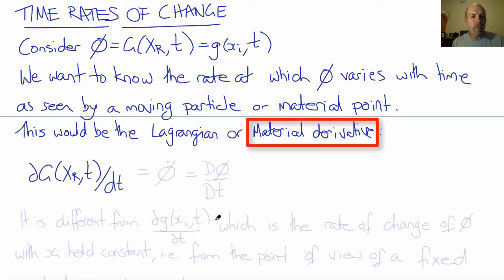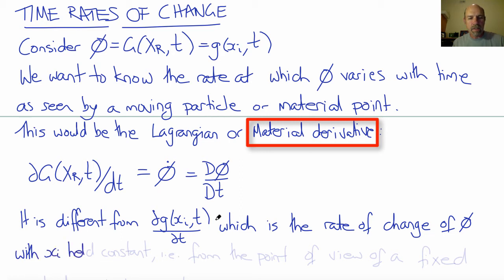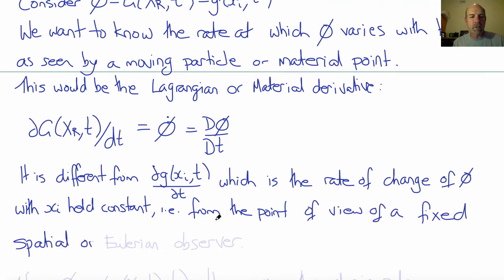The Lagrangian or material derivative of phi is ∂G(X_R, t)/∂t, also written as phi-dot or Dφ/Dt, where we use a capital D in this so-called material derivative. This is different from ∂g(x_i, t)/∂t, which would be the rate of change of phi with little x held constant — i.e., as seen from the point of view of a fixed spatial observer, as opposed to a moving material observer.